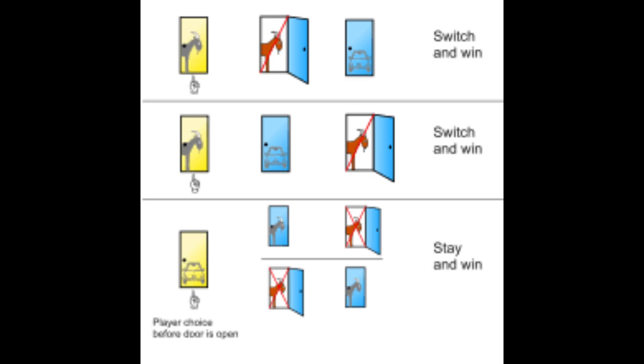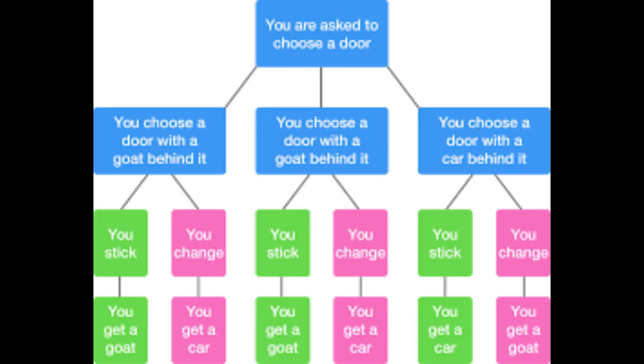The host Monty Hall asks you to pick a door. After you choose, Monty, who knows what's behind each door, opens one of the other doors to reveal a goat. Now he gives you a choice. Stick with your original door or switch to the other unopened door.